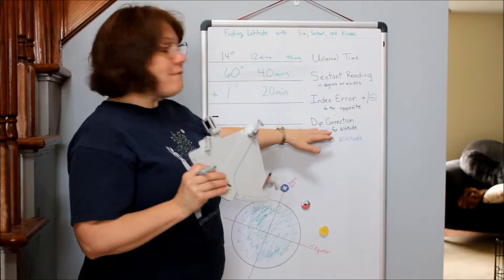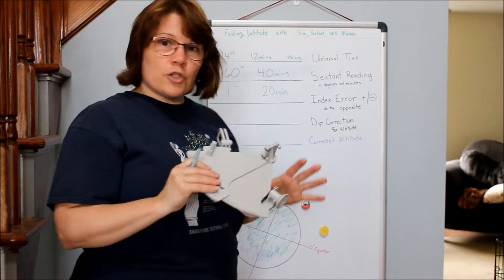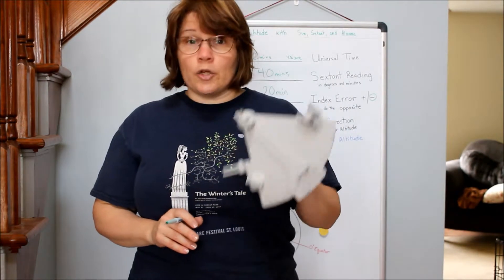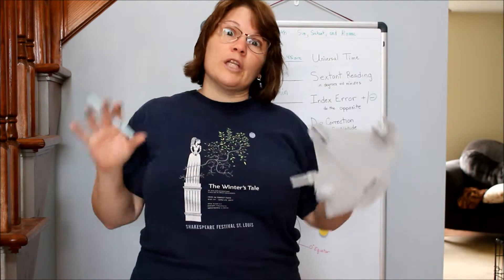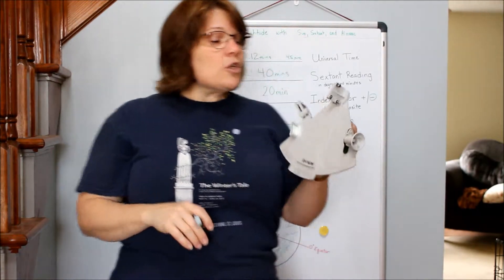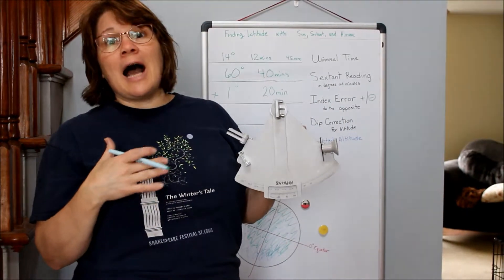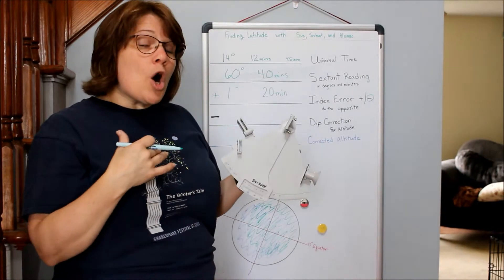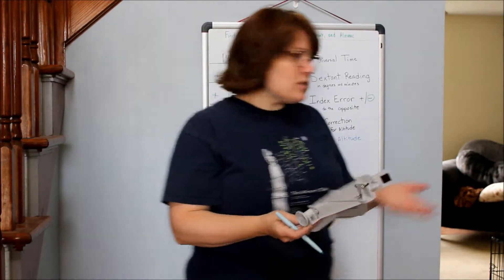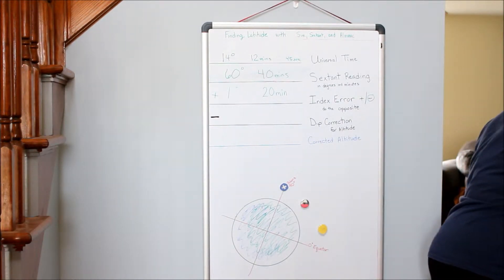Then you have your dip correction. Dip correction is really important. My sextant reading is going to be different if I'm in an airplane, different if I'm on the bow of a really large ship. It's designed to be read as if I'm laying on the ground at the beach looking off at the horizon, so I have to account for all of the height I am.